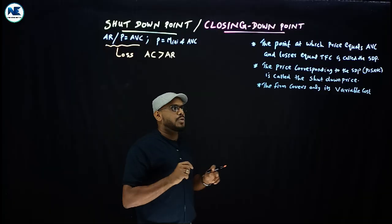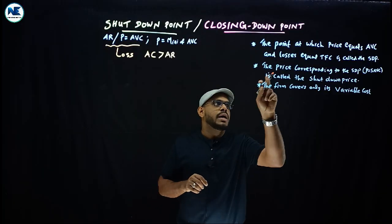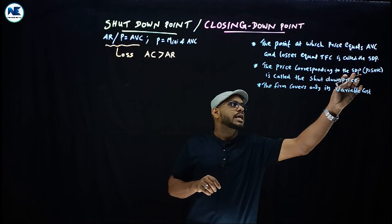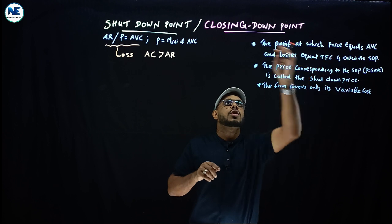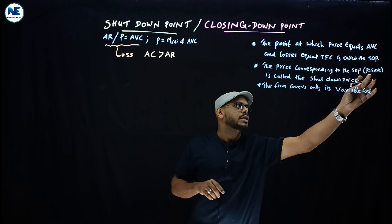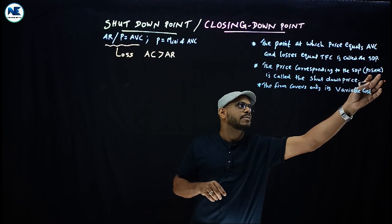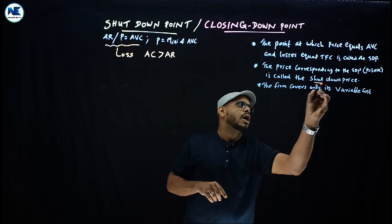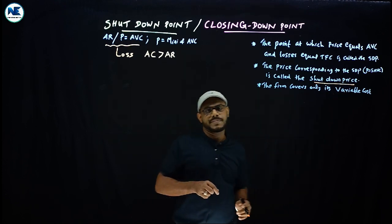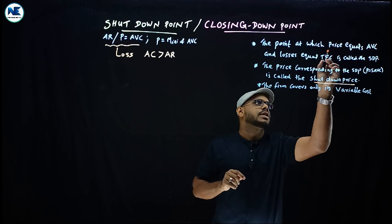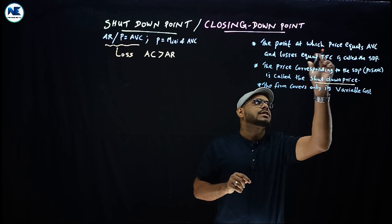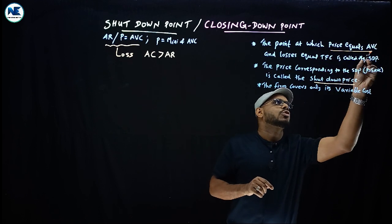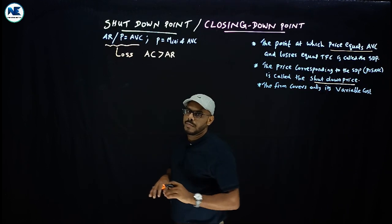Another key point: the price corresponding to the shutdown point or closing down point — that is, price equal to short-run average variable cost — is called the shutdown price. The point at which price equals average variable cost is the critical threshold.